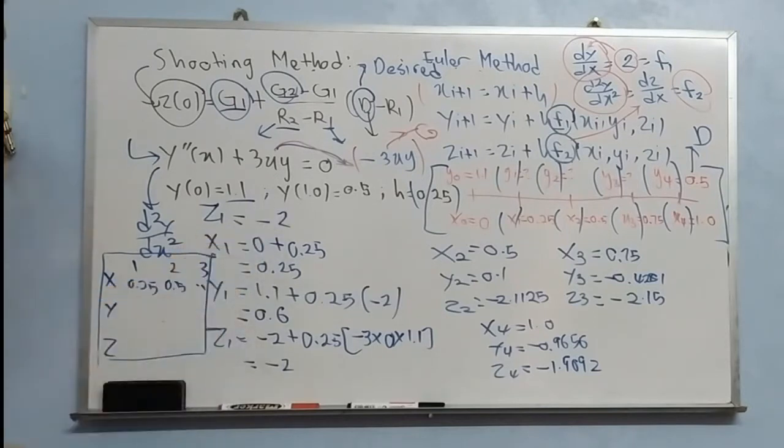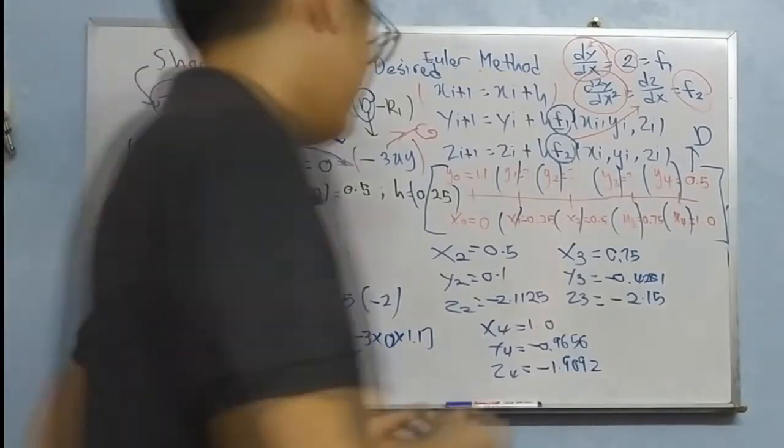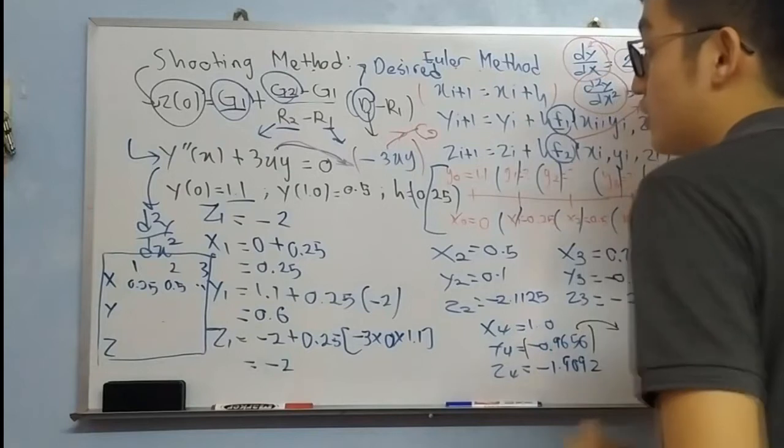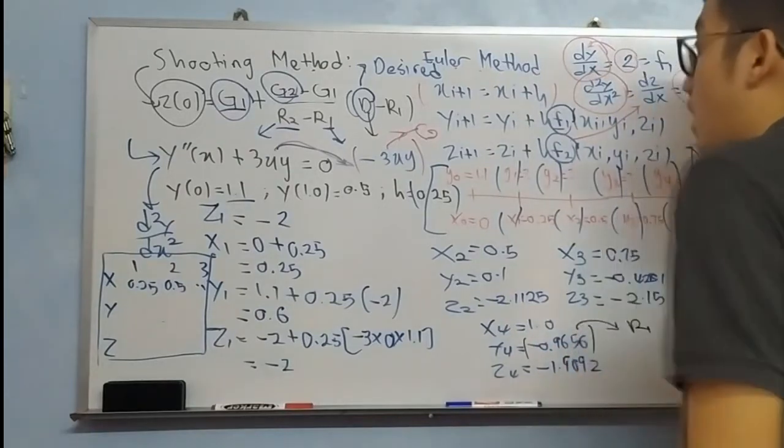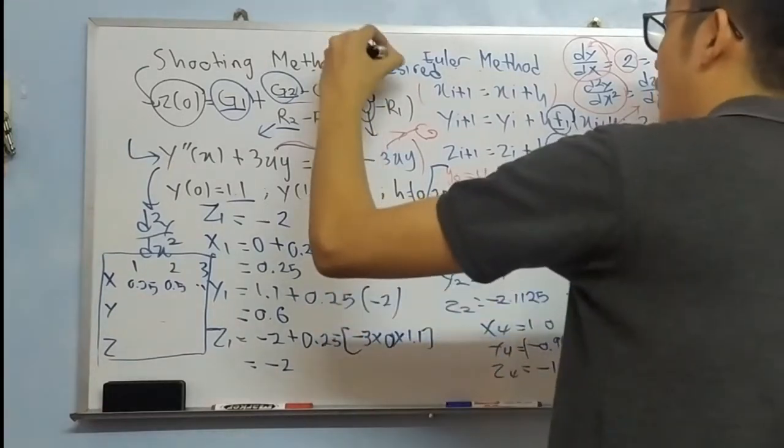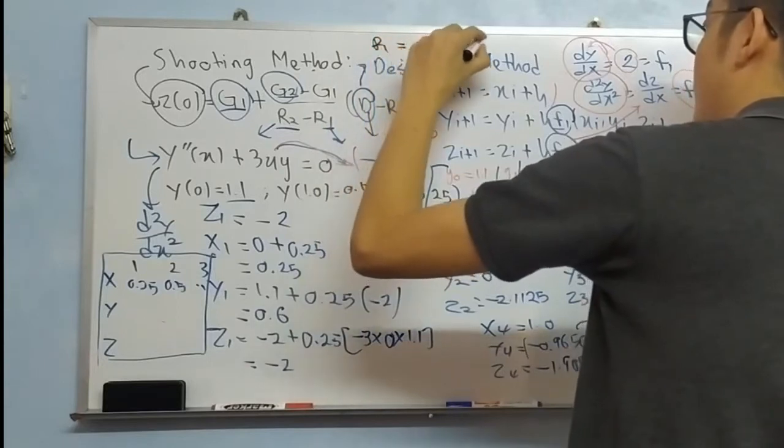So now this is row one. We want to highlight this value because this is our R1 value. So we write it here: R1 equals to 0.9656.